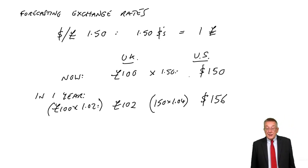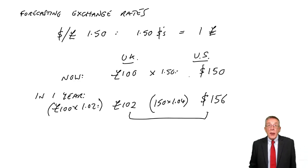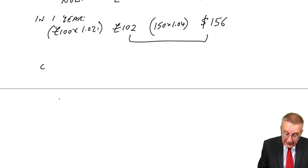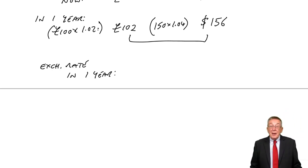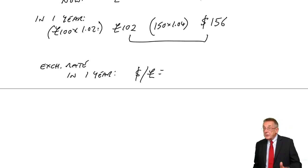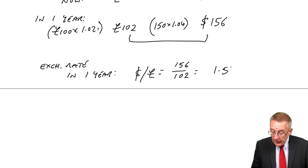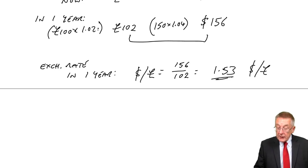What purchasing power parity says is that the exchange rate will change to keep the two prices equivalent. So what would the exchange rate have to be in a year's time? For 102 pounds to be equivalent to 156 dollars, remember the way we're quoting it here, how many dollars equals one pound. So if 102 pounds is 156 dollars, one pound will be 156 over 102.